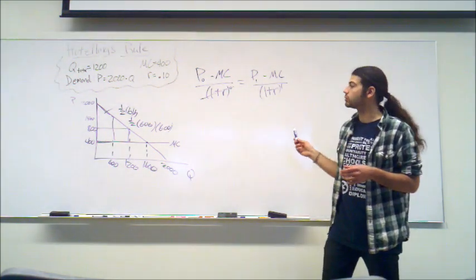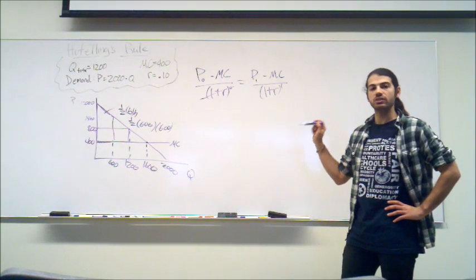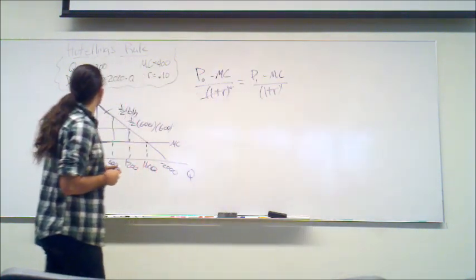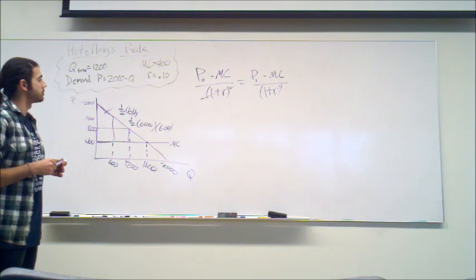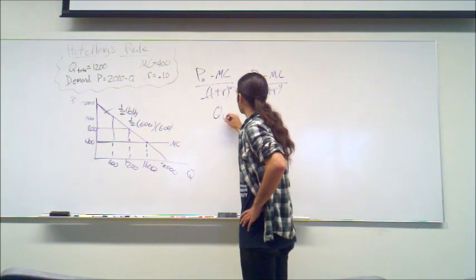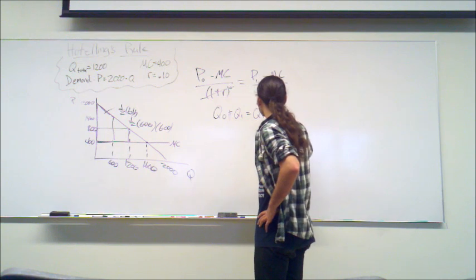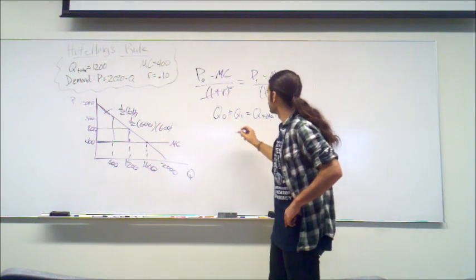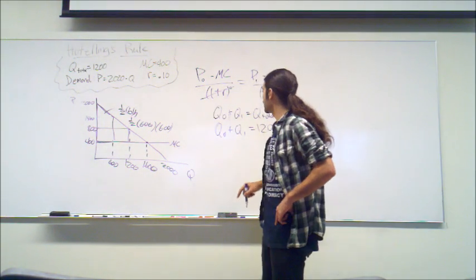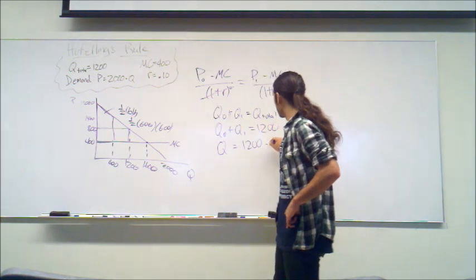I'm going to work out Hotelling's Rule with the interest rate to find maximum efficiency based on our discount rate of 10%. We substitute R equals 0.1. We know Q total equals 1,200, which means Q0 plus Q1 equals Q total. So we can rewrite that as Q0 equals 1,200 minus Q1, allowing us to solve with one variable.